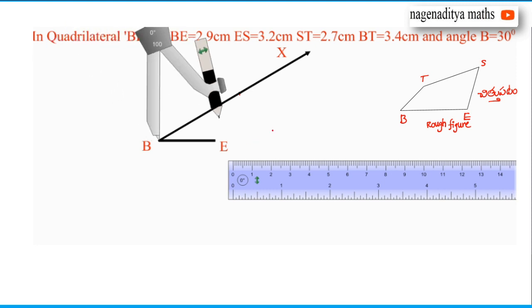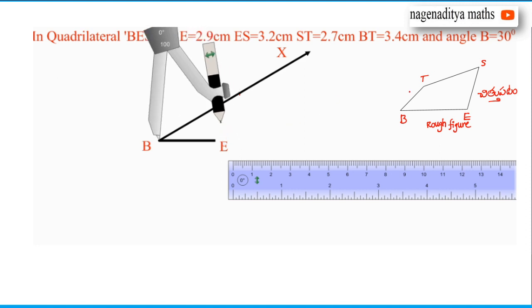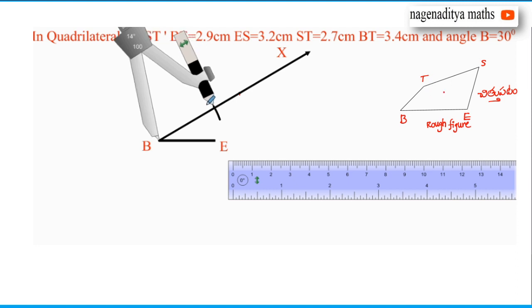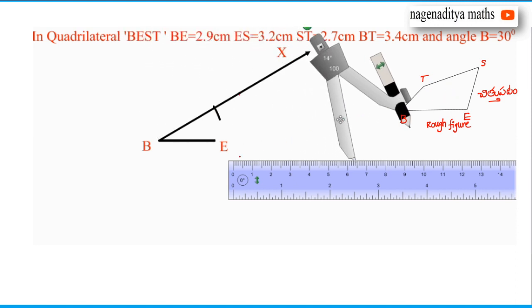From this rough diagram construction, we draw BT on the ray. If we draw BT, then we can denote the point T where the arc intersects ray BX.